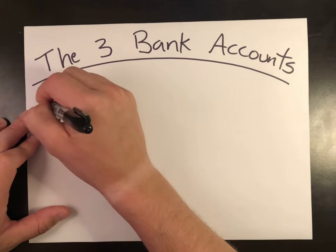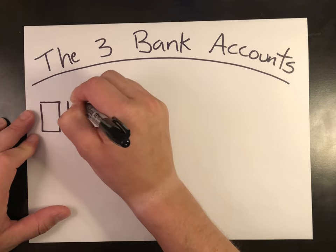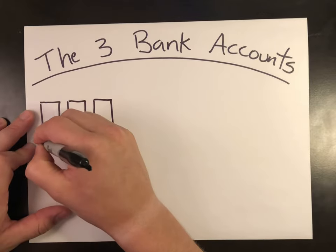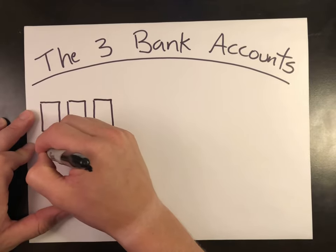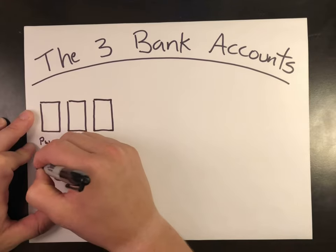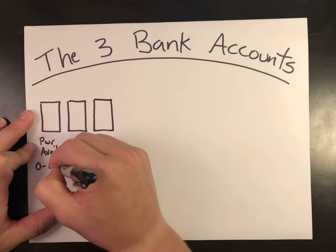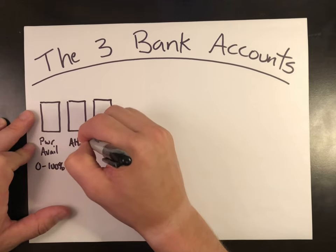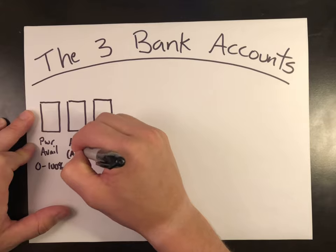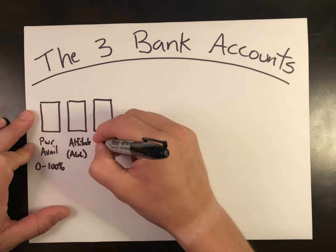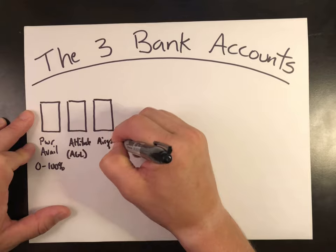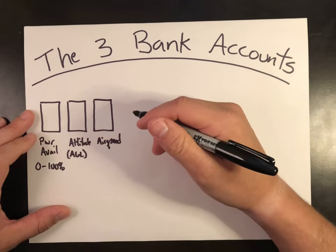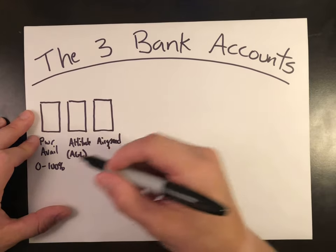Some people refer to these as three buckets — it's all the same analogy. The first account is power available, from zero to 100 percent. Next is altitude — your above ground level, or AGL, altitude. Last is airspeed: the speed the aircraft is traveling. These balances vary and fluctuate throughout each part of the flight.